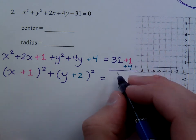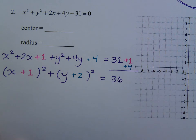All together on the right side we have 36. So now I have my equation in the form where I can easily pick off the center and the radius.